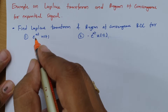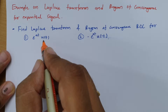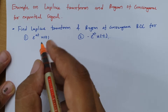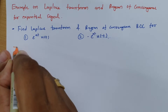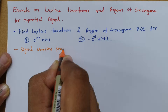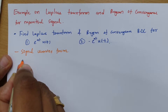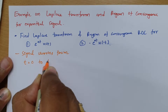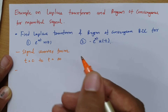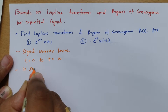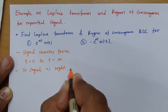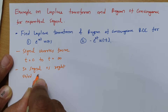For the first signal, e to the power at times u(t), this signal varies from t equals 0 to t equals infinity. Since the signal varies from t equals 0 to t equals infinity, this signal is a right-sided signal.